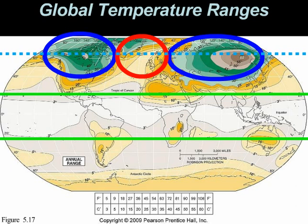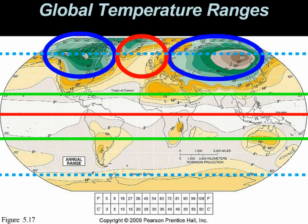Understanding these differences explains why London actually has a warmer winter than Montreal, even though they're at the same latitude and relatively the same elevation. England and the United Kingdom are along a water body, whereas Montreal is deeper within a continent. We also note that the greens and grays on the global map appear much more in the northern part of the world because of more land masses — the Northern Hemisphere is called the Land Hemisphere, and the Southern Hemisphere the Water Hemisphere, which shows far less temperature fluctuation.